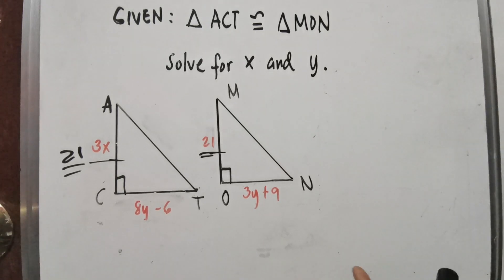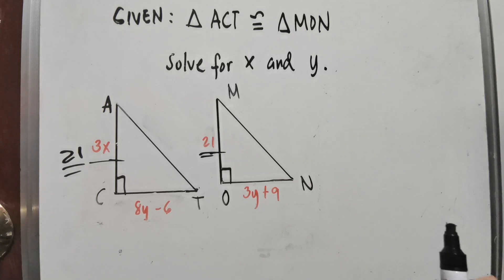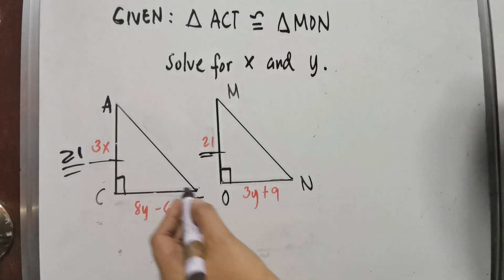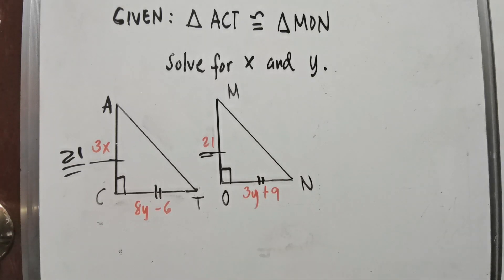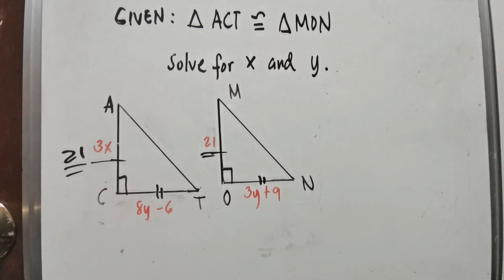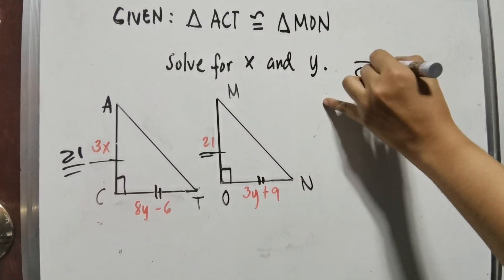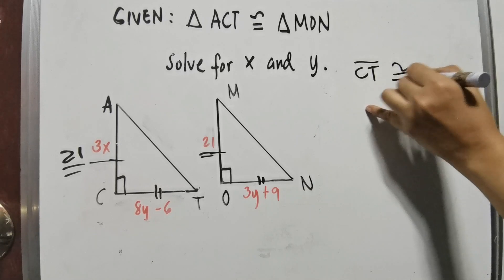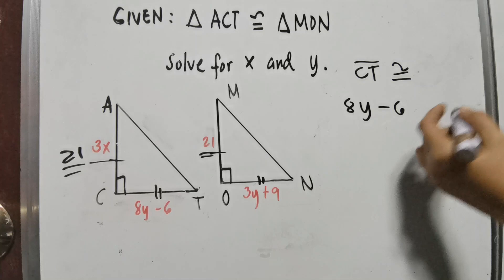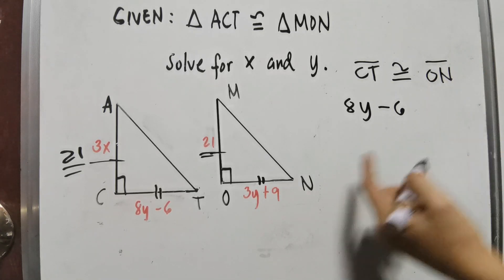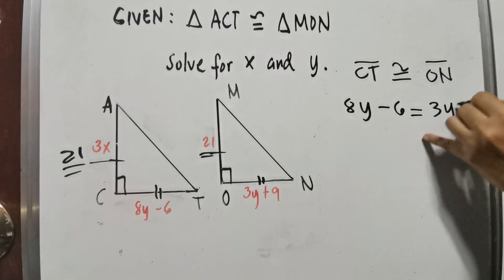Now for the value of Y, we have two congruent sides again: line segment CT is congruent to line segment ON. This time, the measurements are unknown. For line segment CT we have 8Y minus 6, which is congruent to line segment ON with measurement 3Y plus 9.